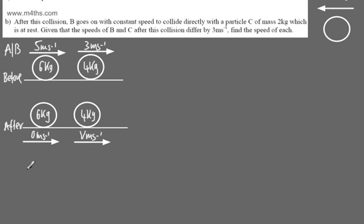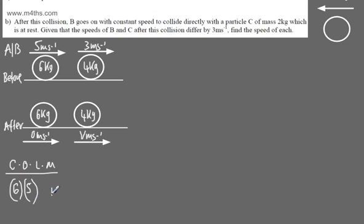We now need to use the conservation of linear momentum. As we saw in the last video, the total momentum prior to the collision equals the total momentum after the collision. Momentum is mass times velocity. The total momentum before is 6 × 5 plus 4 × 3.